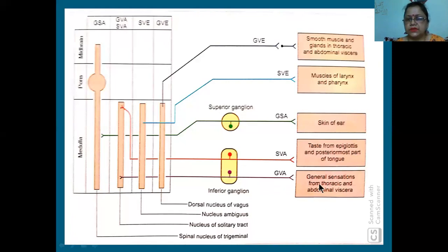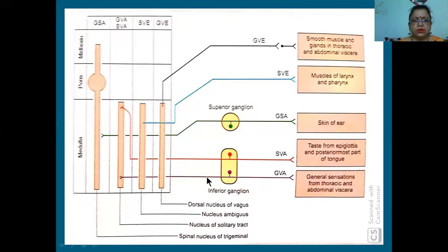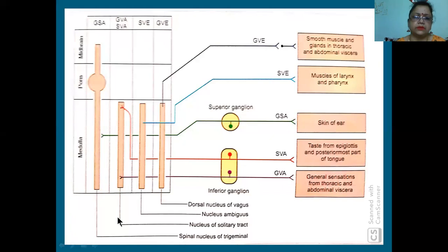General visceral afferent provides general sensations from thoracic and abdominal viscera. All these ultimately come to the nucleus of solitary tract. I have explained this, and now step by step I will explain in details.